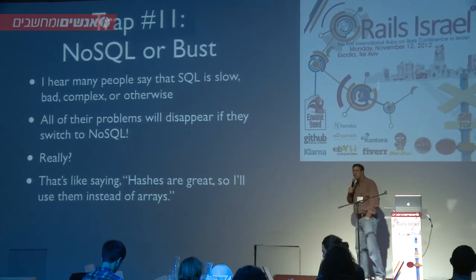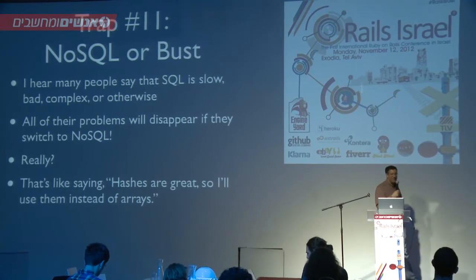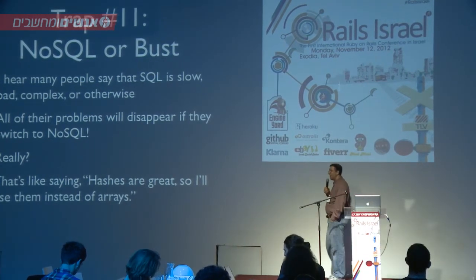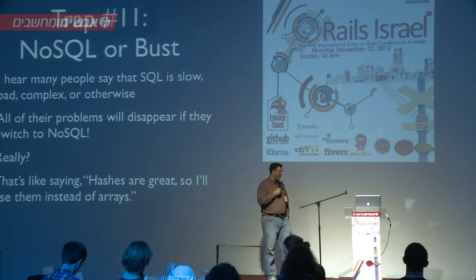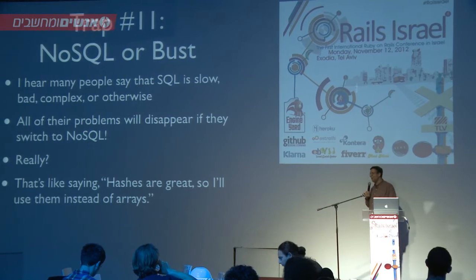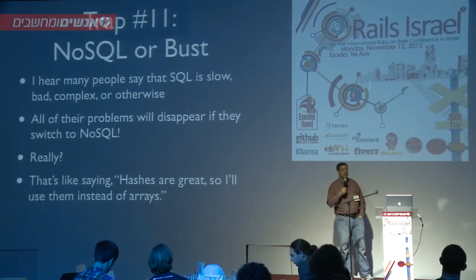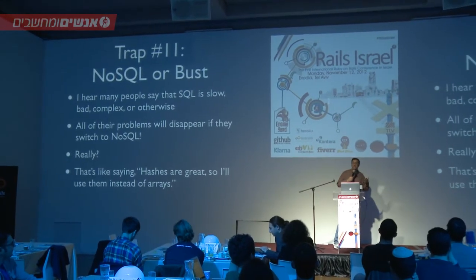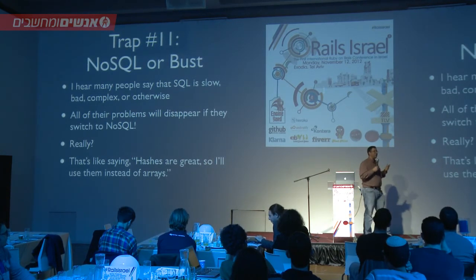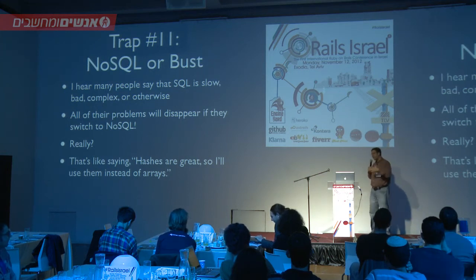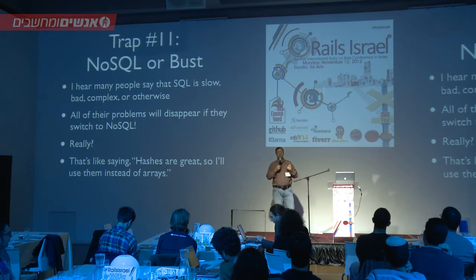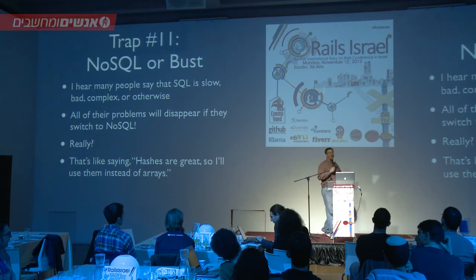Another thing: people say SQL is slow, hard, complex, so if I switch to NoSQL I won't have any problems at all. There are some advantages to NoSQL databases, but switching technologies won't solve all of your problems — it will change the problems that you have. I like to think of NoSQL databases as an alternative data type: I have a SQL database, I have a NoSQL database, and I can use them for different things. Saying you're going to switch whole hog is like saying 'hashes are a great data type, so I'm going to get rid of all my arrays and use hashes instead.' Probably not a wise idea.